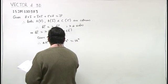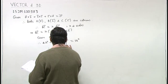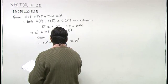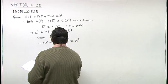So lambda square is 14 square upon 49, which means lambda is plus minus 2.